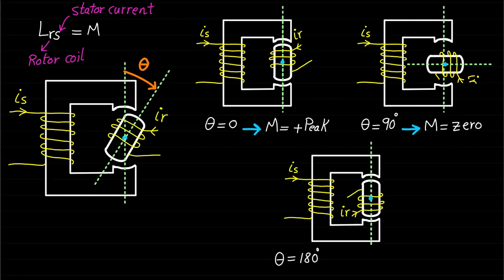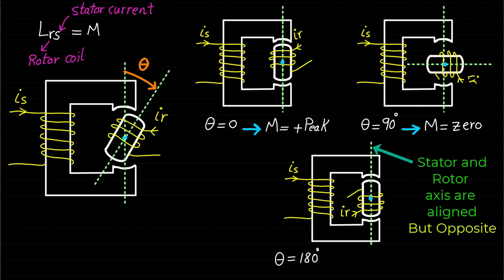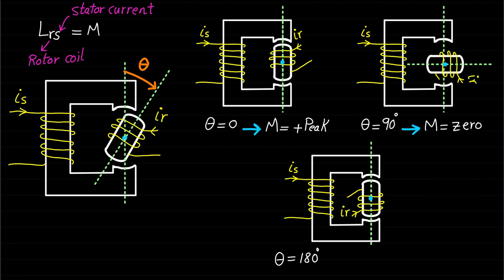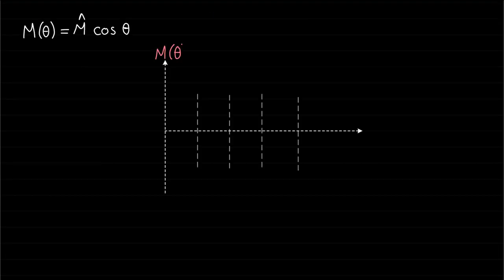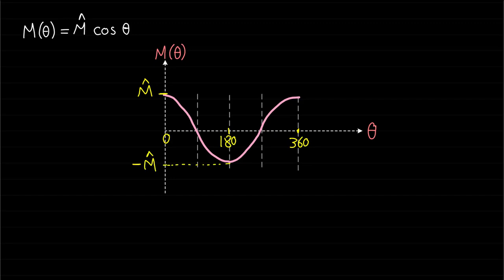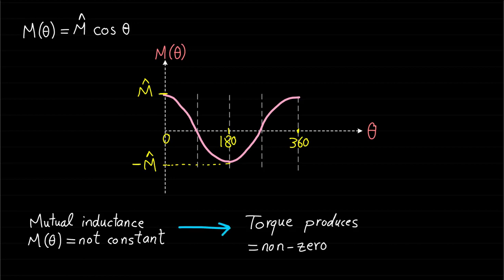When theta equals 180 degrees, the magnetic field produced by IS is fully linking the rotor coil. However, at this position, the stator and rotor magnetic field axes are aligned but in opposite direction. Therefore, the mutual inductance Lrs will have a negative peak or negative maximum. In general, this behavior of mutual inductance can be represented mathematically as: M of theta equal to M-hat cosine theta. This inductance can be represented graphically as shown. So the mutual inductance can be negative as well as positive depending on the rotor position. As we can see, the mutual inductance changes and it is not constant. Therefore, we expect a torque component produced as a result of the change of mutual inductance.